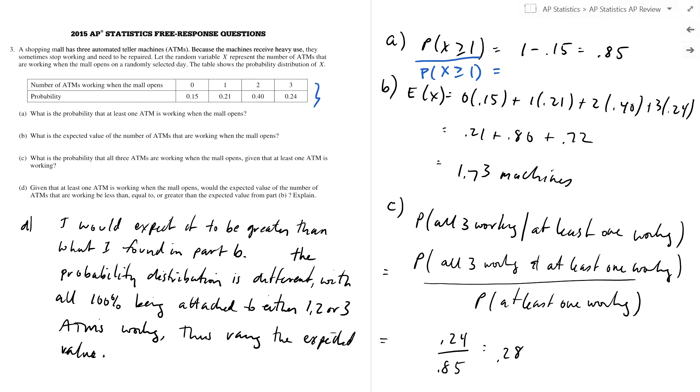I mean, communicate what it is you mean to say. By saying x is greater than one, you mean the probability x is greater than one, but when you write it down that's not what that means. That just means x is greater than one. It means the number of ATMs is greater than one, doesn't mean the probability. So make sure you write that down.